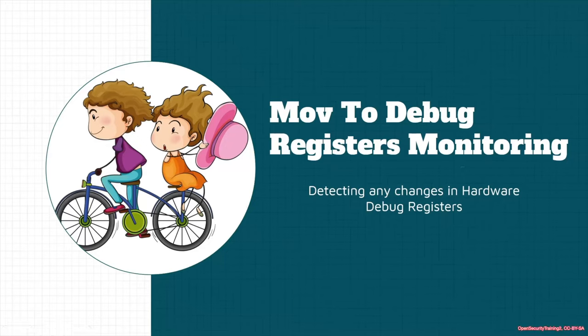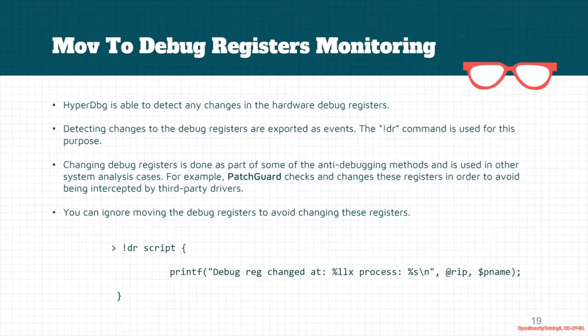Another possible scenario you can use in HyperDbg is monitoring moves to debug registers. Debug registers are used by debuggers, but in case you want to just notify any changes in hardware debug registers, you can use the DR event in HyperDbg. For example, I don't know whether it's still PatchGuard that modifies or accesses some of the debug registers.